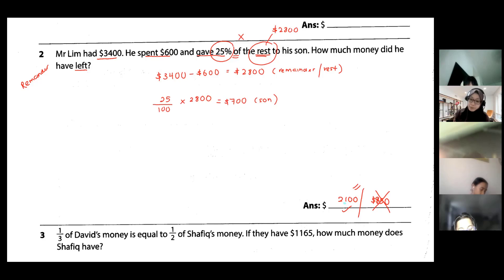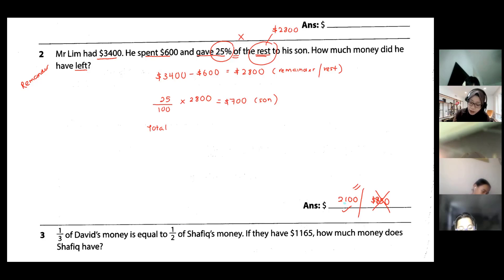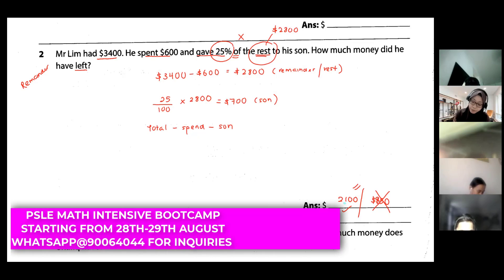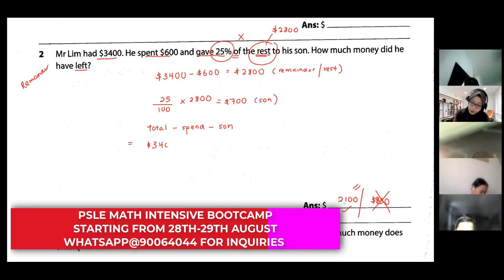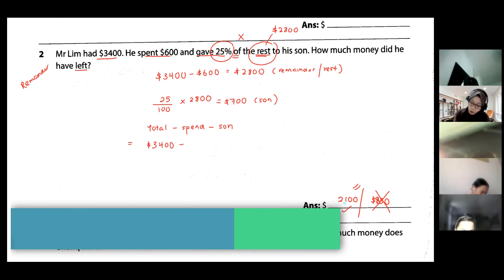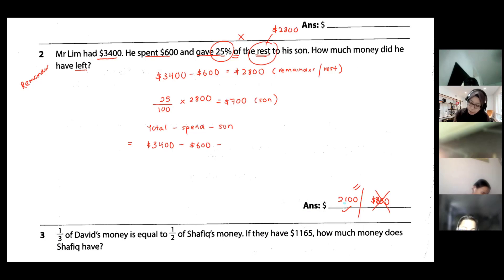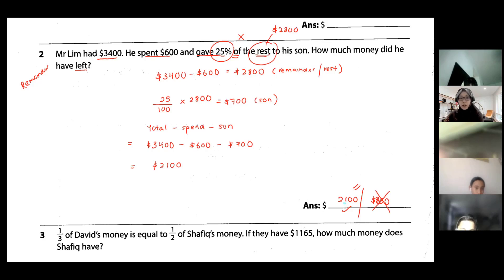How much money does he have left? 'Left over' means total take away all that is given away — his spending and what he gives to the son. So: three thousand four hundred minus six hundred he spent, minus seven hundred given to the son, equals two thousand one hundred dollars. Those of you who got it wrong, perhaps this part was not right.